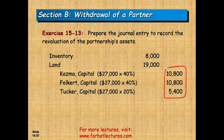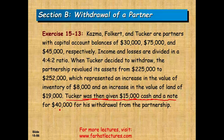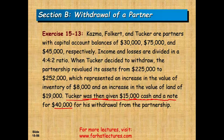Tucker was given $15,000 in cash and a note for $40,000 for his withdrawal from the partnership. So the total being given to Tucker is $55,000. What does a note for $40,000 mean? Basically, we are taking over a note — a liability that Tucker was responsible for — and adding it to the partnership's books.